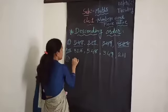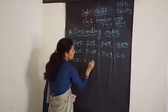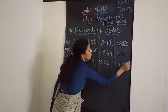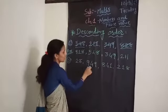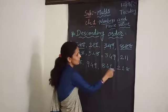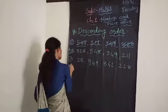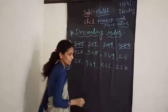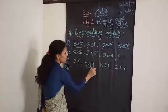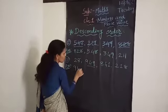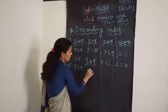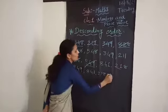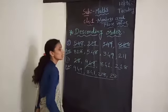Let's take another example: 28, 949, 841, and 211. It's descending order so we write the biggest number first. Note that 28 is a 2-digit number and the rest are 3-digit numbers — keep this in mind. So first we write 949 because 9 is the biggest Hundreds digit. Then 841, then 280, and lastly 28. These numbers are in descending order.